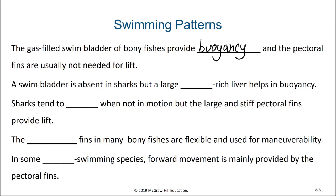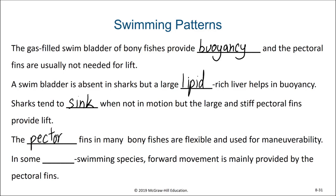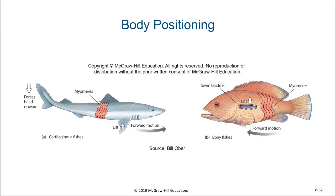Sharks do not have a swim bladder, but they do have a large lipid-filled liver which helps with buoyancy. Sharks tend to sink when not in motion, but the large and stiff pectoral fins provide lift. The pectoral fins in many bony fish are flexible and used for maneuverability, whereas in some fish forward movement is mainly provided by the pectoral fins. Here we see a diagram of the general body shape for sharks and bony fish, and we can see differences in the pectoral fins. The presence of a swim bladder helps bony fish with their buoyancy, whereas the heterocercal tail and the stiff pectoral fins help provide sharks with lift.